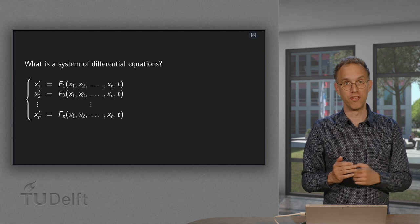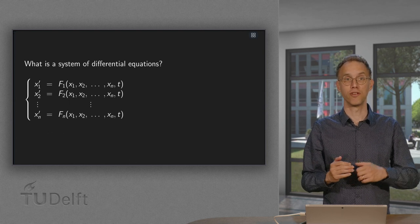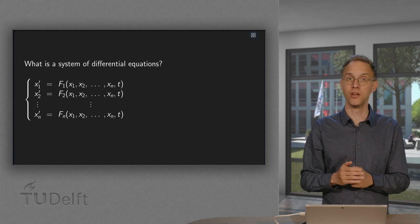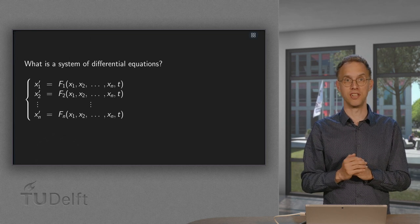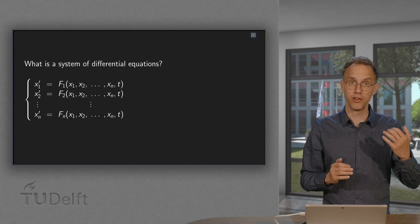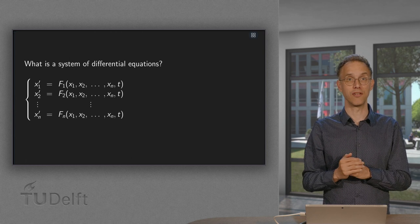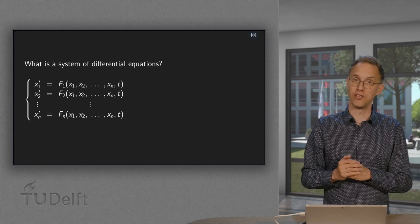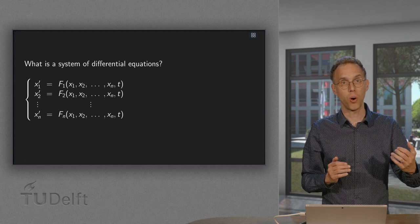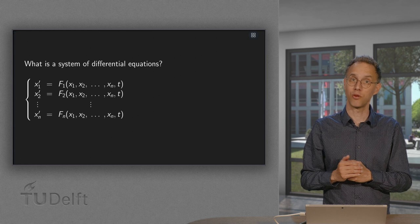A system of differential equations is a number of differential equations for the functions x1(t) up to xn(t). Your solutions are now not numbers, but functions x1(t) up to xn(t), and these functions have to be found such that all the differential equations of the system are satisfied at once.